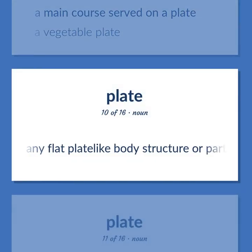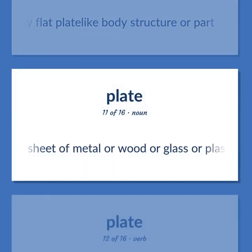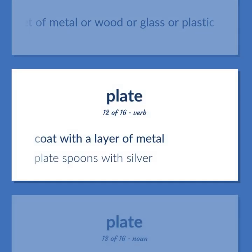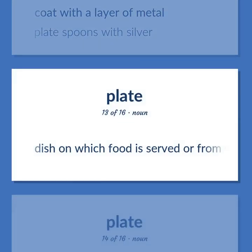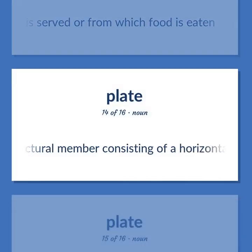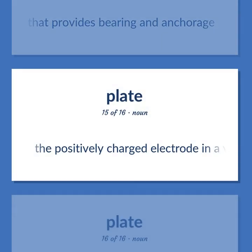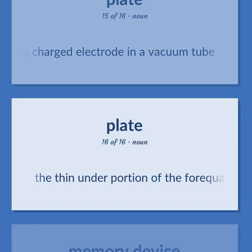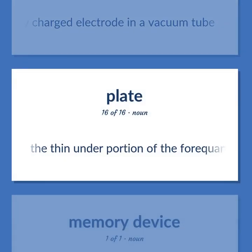Any flat plate-like body structure or part. A sheet of metal or wood or glass or plastic. Coat with a layer of metal. Plate spoons with silver. Dish on which food is served or from which food is eaten. Structural member consisting of a horizontal beam that provides bearing and anchorage. The positively charged electrode in a vacuum tube. The thin under portion of the forequarter.